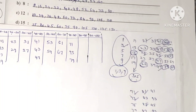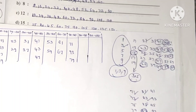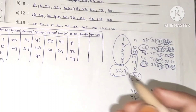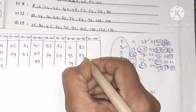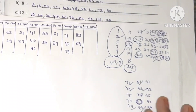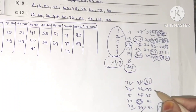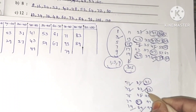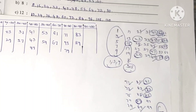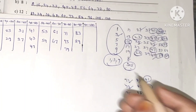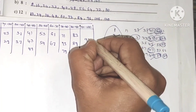Continuing to check: 83 and 89 are not in any table, so they are prime numbers. Checking up to 100: 97 is also a prime number.